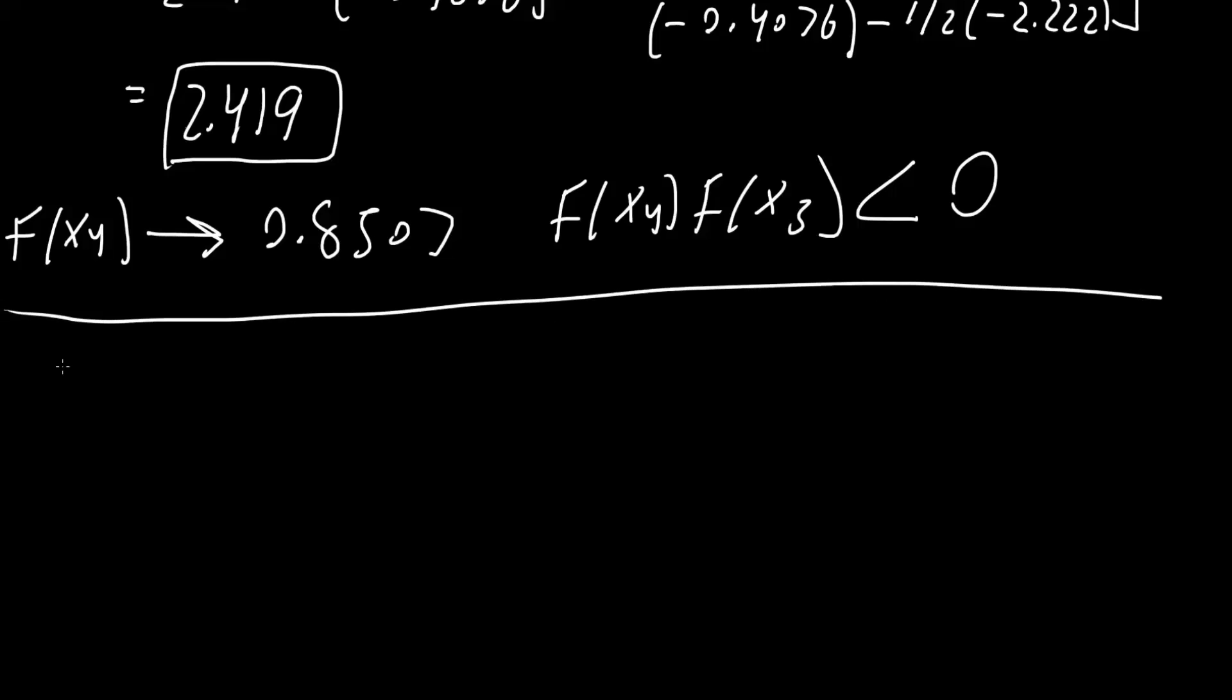And so the fourth iteration will look something like this. x5 is equal to x4 minus f(x4) times x4 minus x3 divided by f(x4) minus f(x3), like this. If you notice, no one-half because this was less than 0. And now we write what we have.